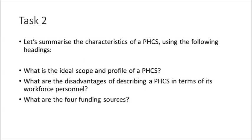For task two, we're going to consider the remaining themes from Chapter 7 of Ducat and Wilcox, and summarise the characteristics of a primary health care service using the following headings: firstly, what is the ideal scope and profile of a primary health care service? What are the disadvantages of describing the primary health care service in terms of its workforce personnel? And thirdly, what are the four funding sources? I'll go through a summary under these headings over the next couple of slides, but you'll need to read Chapter 7 in more detail for a full grasp of the concepts.